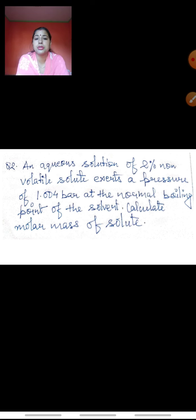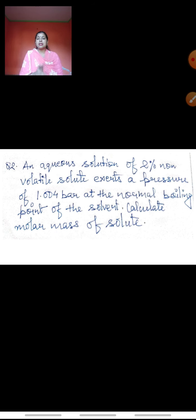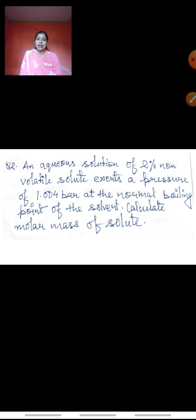The second question is an aqueous solution of 2% non-volatile solute. Note that 2% means 2 grams of non-volatile solute present in 98 grams of water — so WA is 98 grams and WB is 2 grams. Try to solve it yourself. In the next video we will solve the same and proceed with the third colligative property — depression in freezing point. Thank you. Have a good day.